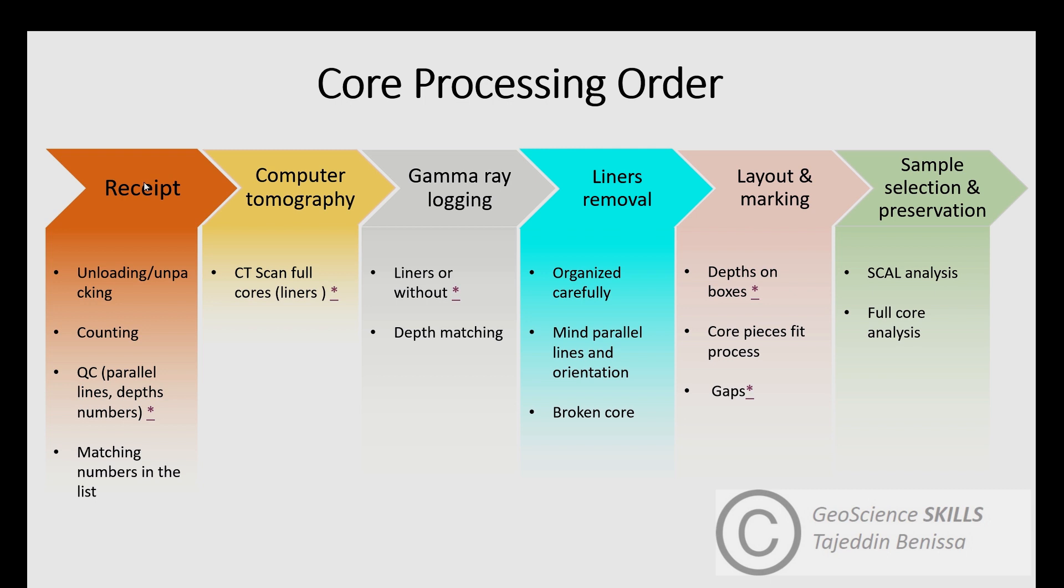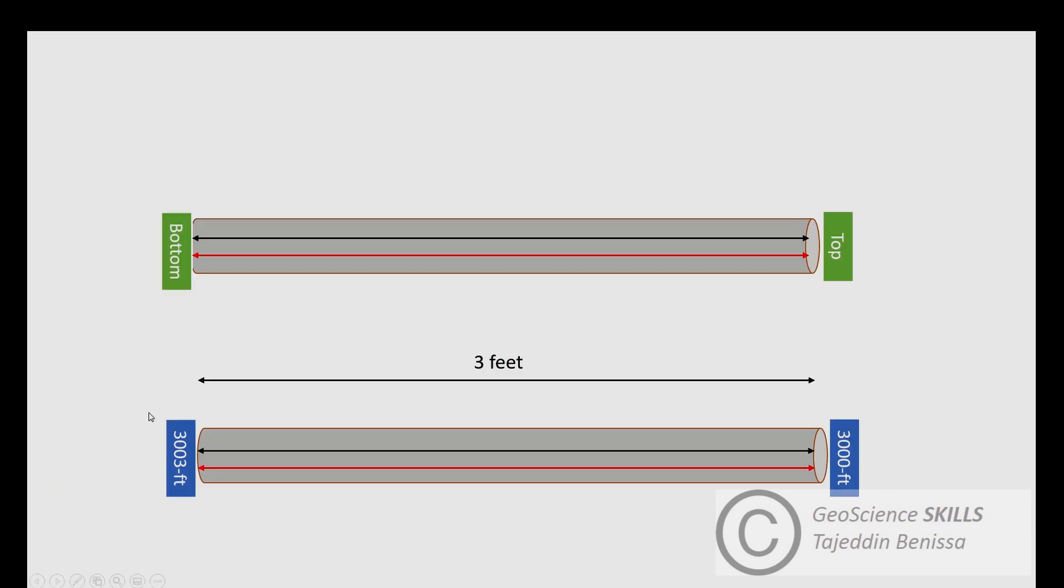Core barrels will be loaded and unpacked from boxes. They must be counted during unpacking to confirm the number by comparing with the company list. The list must be brought when unloading core tubes from the truck. The technicians must check the parallel lines and depth numbers written on core tubes, as the numbers should be written at both ends of every tube to indicate top and bottom of core samples.